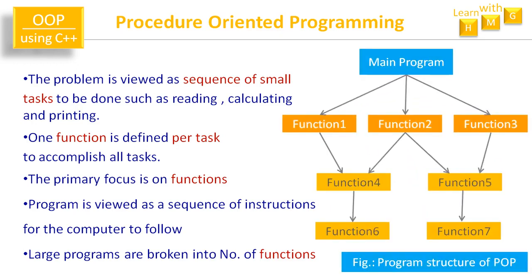Let us understand with the help of a figure. In a program that follows the POP approach, there is a main program which is divided into a number of functions. Here you can see a set of seven functions arranged in a particular sequence to perform the main task. For example, function one has sub-function four, which again has sub-function six, and so on similarly for functions two and three.